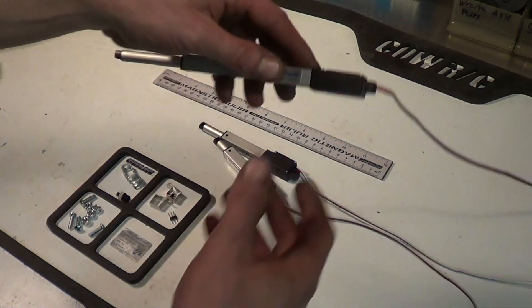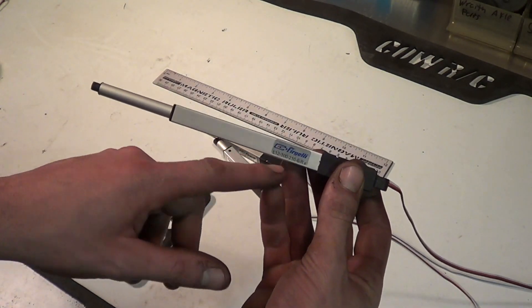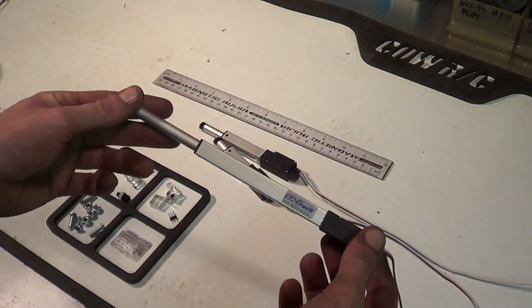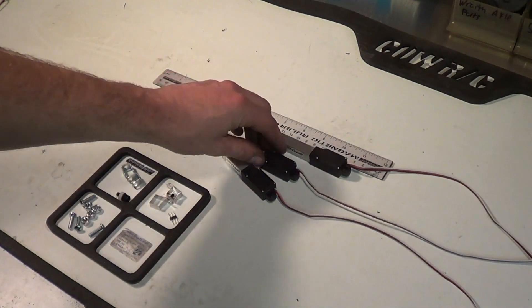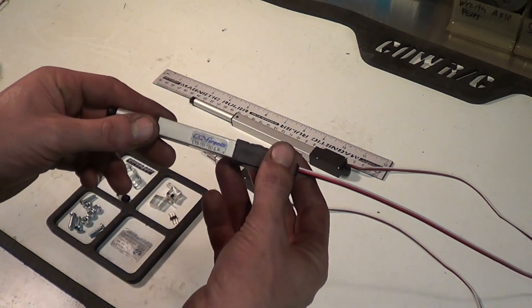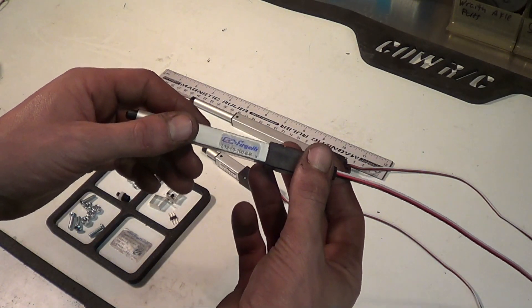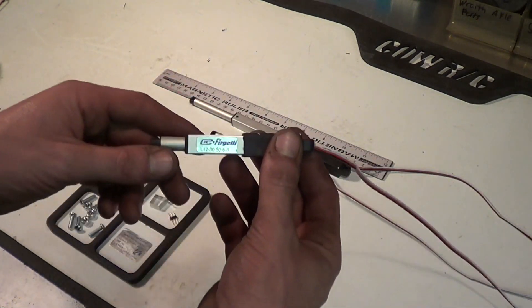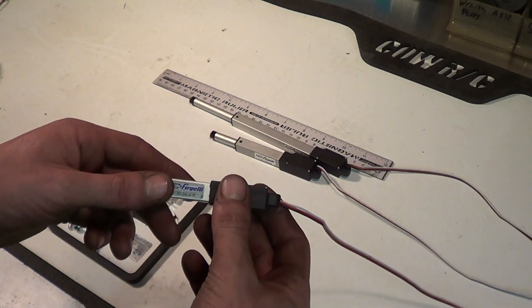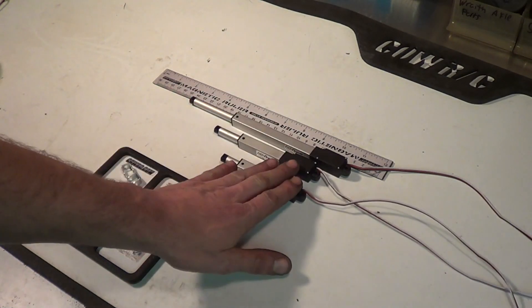I can tell you that the 210 to 1 gear ratio actuator will lift 10 pounds, the 100 to 1 gear ratio actuator will lift 5 pounds, and the 50 to 1 gear ratio actuator will lift about 2 pounds.